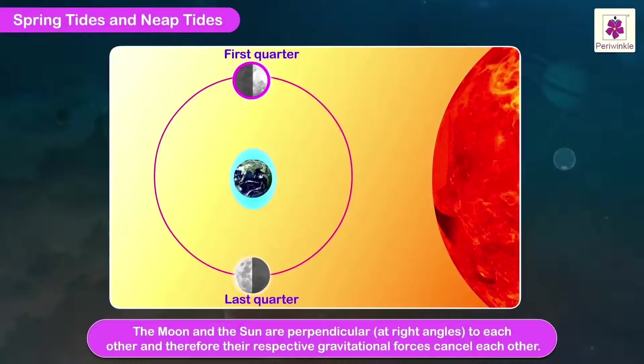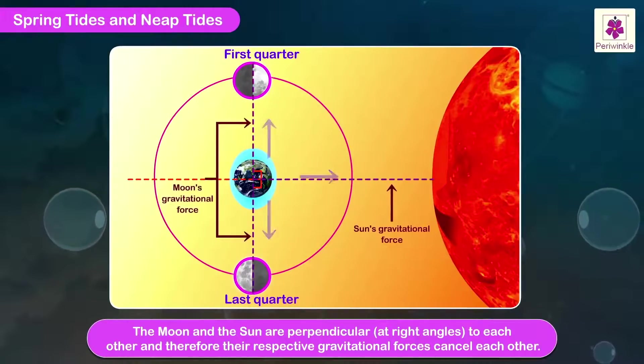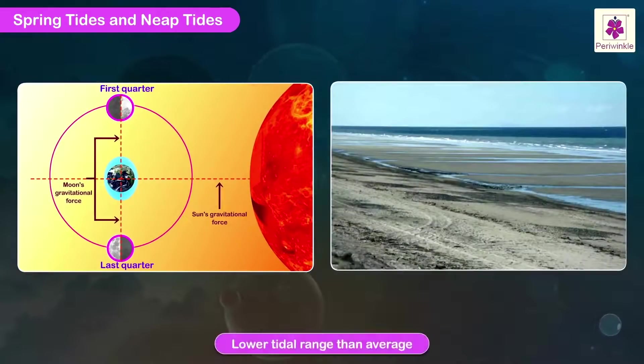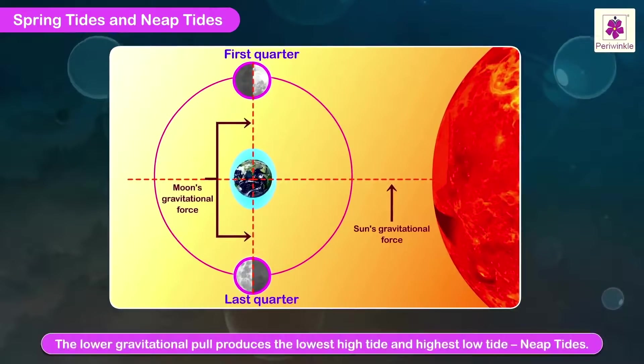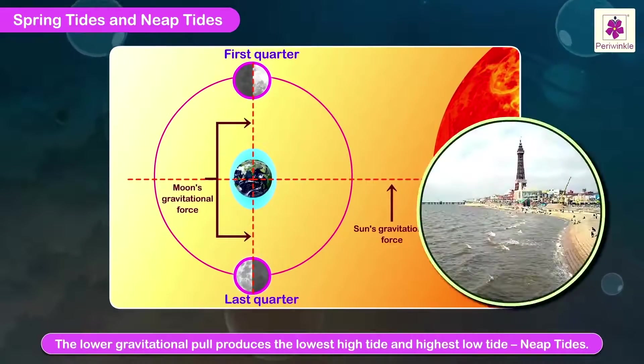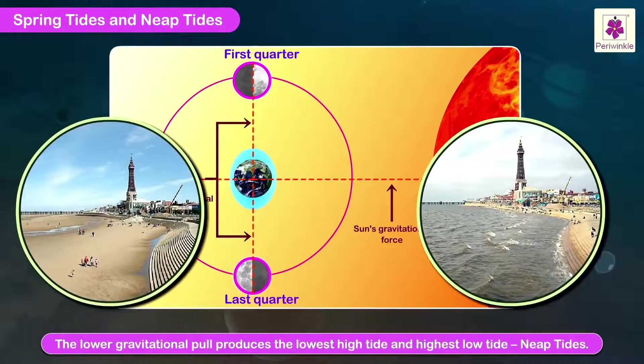During the first and the last quarter phases, the Moon and the Sun are perpendicular, that is at right angles to each other, and therefore their respective gravitational forces cancel each other. This results in a lower tidal range than the average. The lower gravitational pull produces the lowest high tide and highest low tide. These are called Neap Tides.